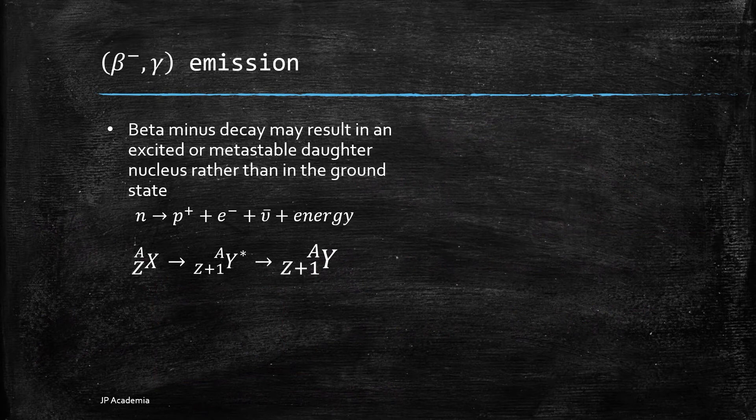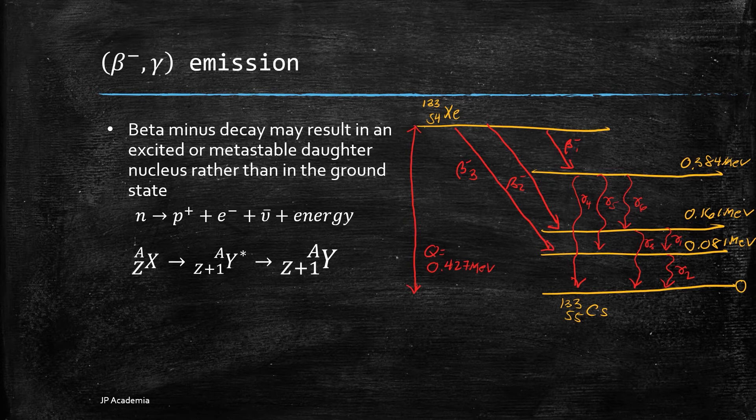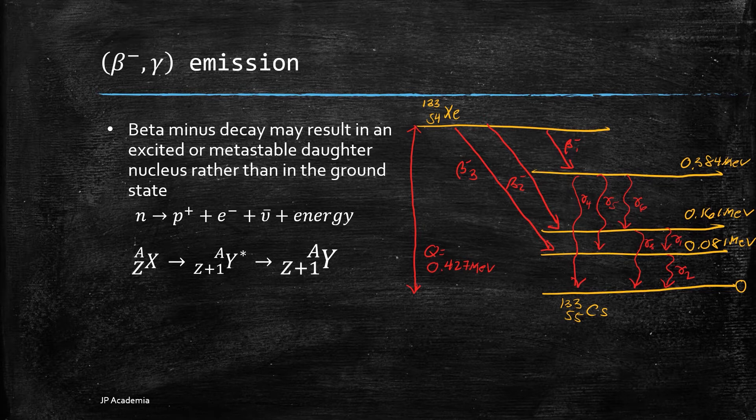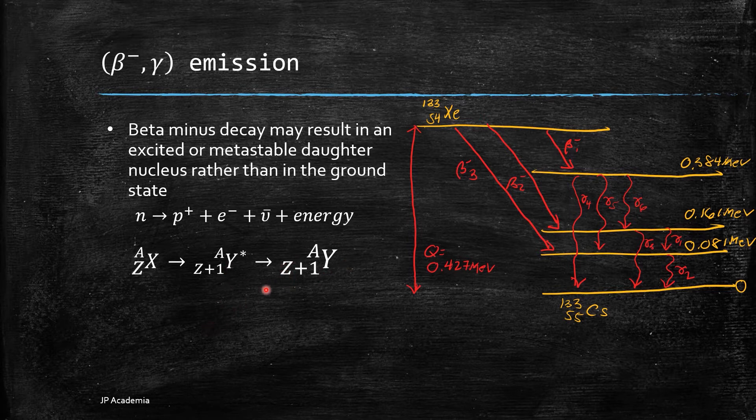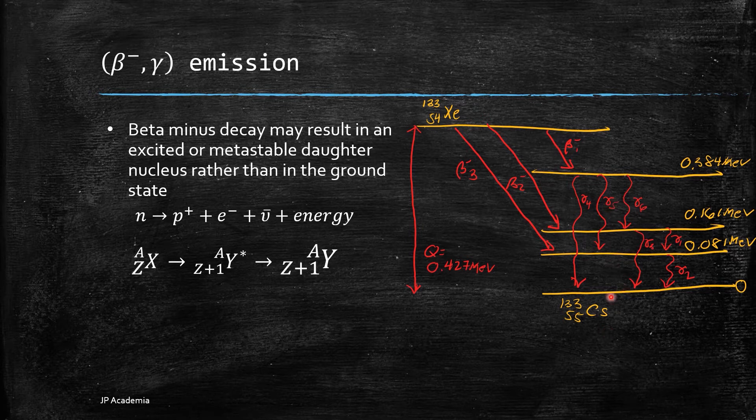There are cases when a beta minus decay may result in a daughter nucleus in an excited or metastable state rather than in the ground state. This refers to beta minus gamma emission. Using our standard nuclear notation, it can be represented as follows. We have the parent that will decay to an excited state or metastable state and this will further decay to a stable state. Note that the emission of gamma does not lead to a new element or transmutation. One example is the decay of xenon-133 which can decay to one of the three excited states of cesium-133. Then the excited daughter will decay to a more stable state through gamma emission.